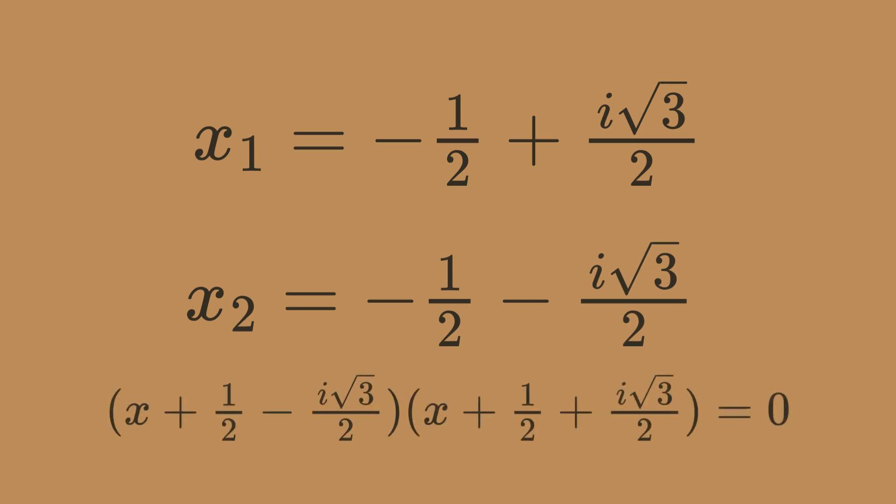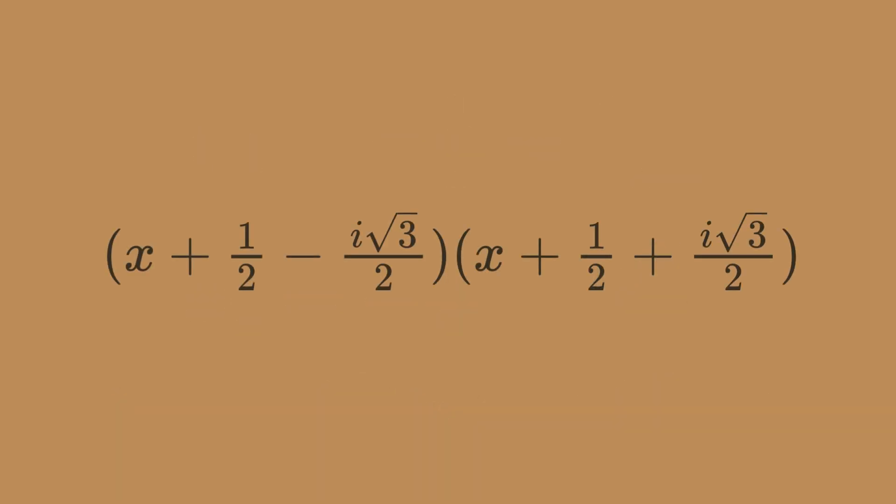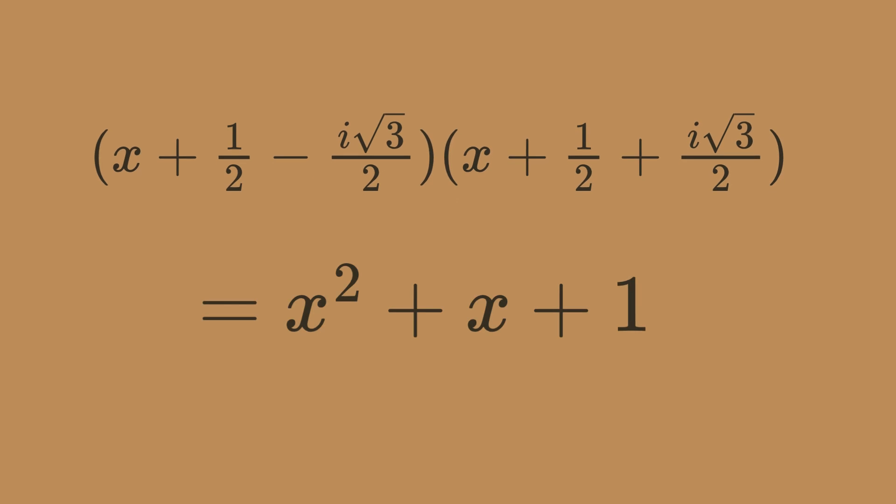If we put these in brackets with x, these should be the factors of our original equation. And sure enough, if you expand these brackets, including our imaginary terms, the result is the original function which only produces real numbers. That is, y is always a real number.